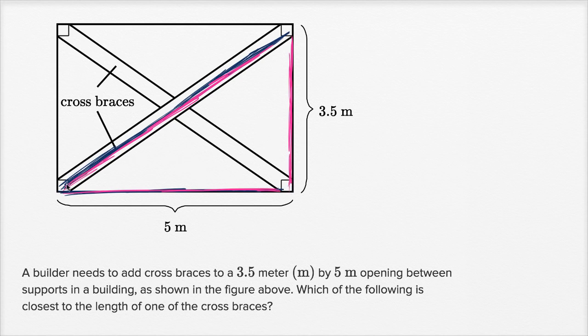If we wanted to solve for the length of the cross brace, that cross brace is the hypotenuse of the right triangle, the longest side. So we can apply the Pythagorean theorem here.